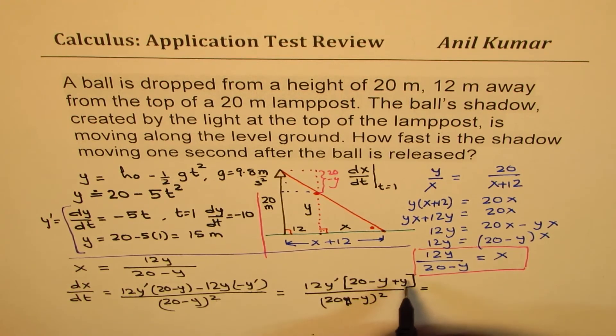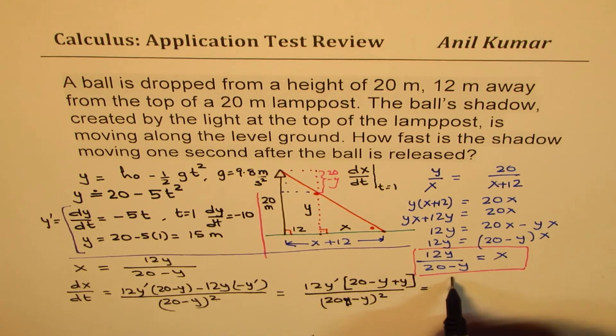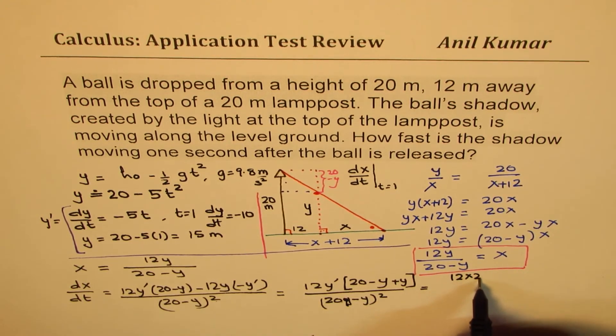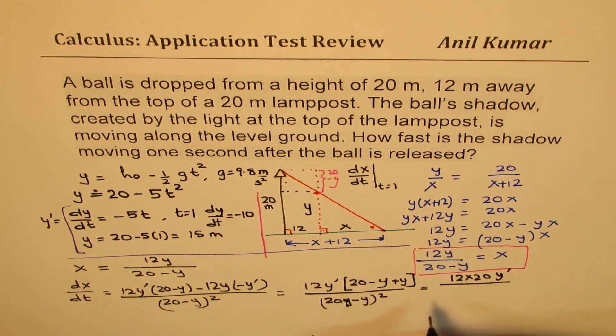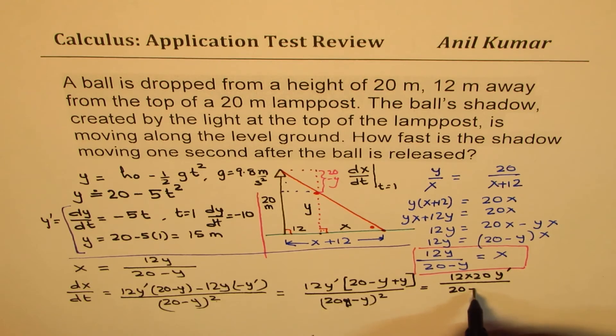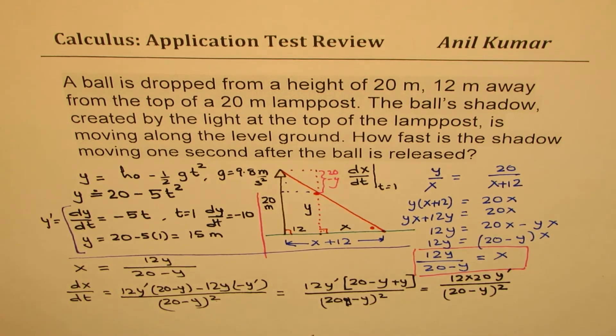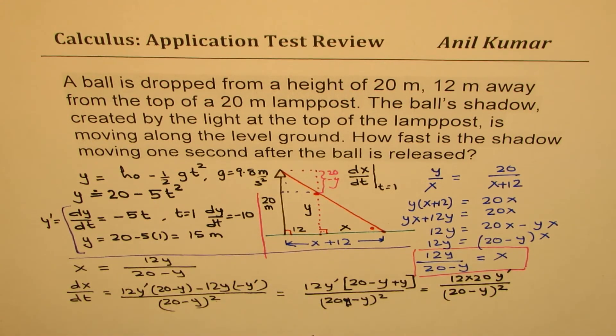Now minus y plus y cancel out. So you get here 20 times 12y prime. So let me write 12 times 20y prime over (20 minus y) whole squared. So that's an easy formula to remember. Since in a test, you may have different dimensions.